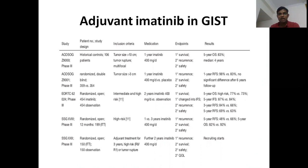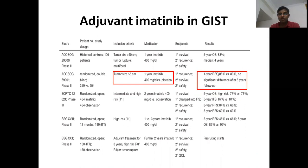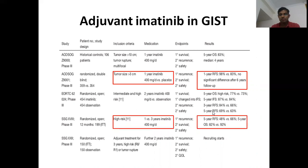The only drug approved in the adjuvant setting is imatinib. The ideal duration is still not known; however, as of now the consensus is three years. The first trial — the ECOG trial — compared one year versus no imatinib (placebo) and found a relapse recurrence-free survival benefit. However, there was no significant difference after six years of follow-up, raising the need for a greater duration of imatinib. The Scandinavian trial compared three years versus one year of imatinib and showed a relapse-free survival benefit along with a 10% overall survival benefit at five years.